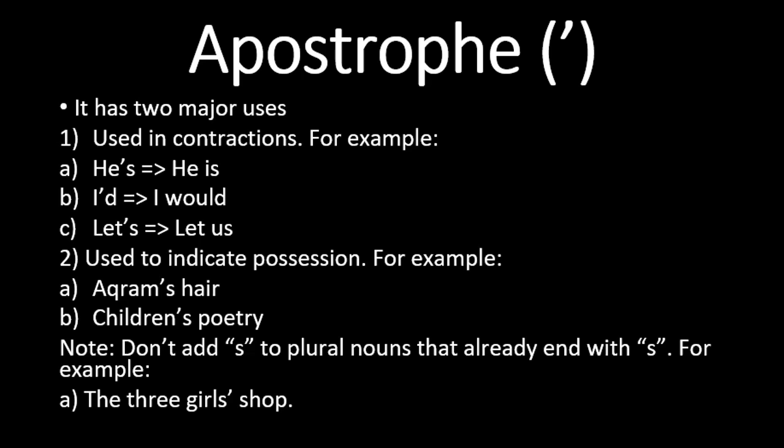An important thing about contraction is that only two words can be contracted in English — you cannot combine three words together on your own. For example, 'let us' becomes 'let's' — you omit the 'u' and add an apostrophe with 's' to 'let'.